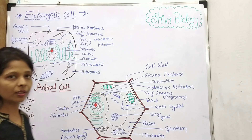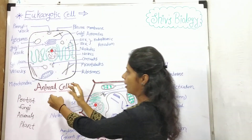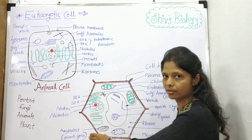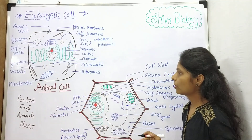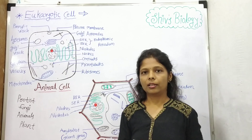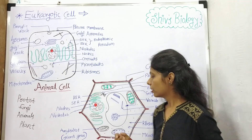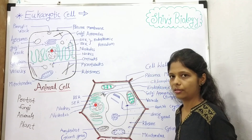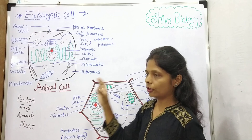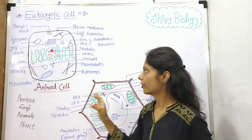I have already drawn the structure — this is the animal cell and this is the plant cell. The animal cell is smaller in size than the plant cell, and different cell organelles are present within eukaryotic cells.